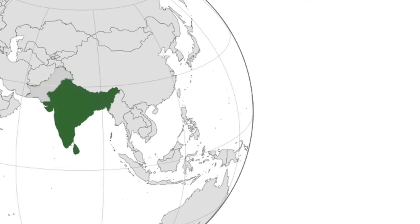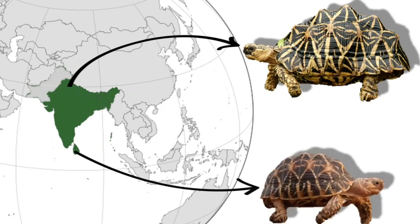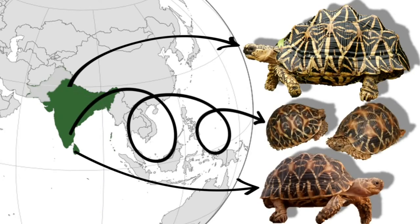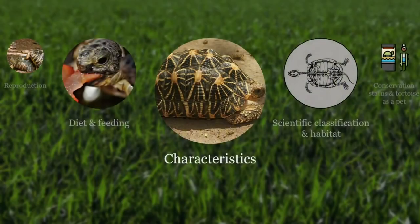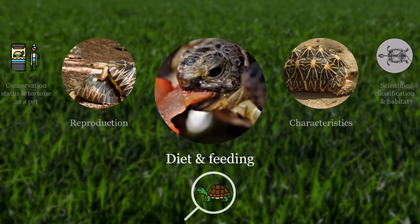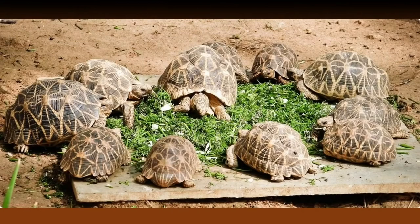The star tortoise from North India, which is the largest; those from Sri Lanka, medium-sized; and those from South India, these being the smallest. Indian star tortoises are mostly herbivorous and feed on grasses, fallen fruit, flowers, leaves of succulent plants, and will occasionally eat carrion.